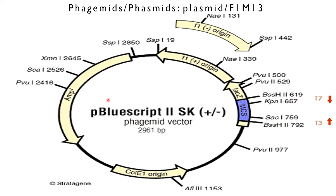Similar to plasmids, a phagemid can be used to clone DNA fragments and be introduced into a bacterial host by a range of techniques such as transformation or electroporation.